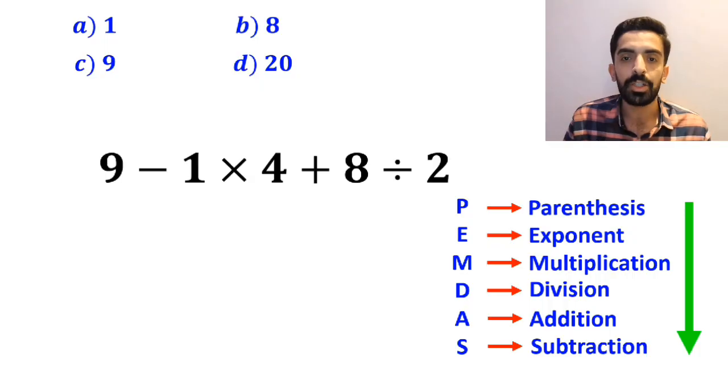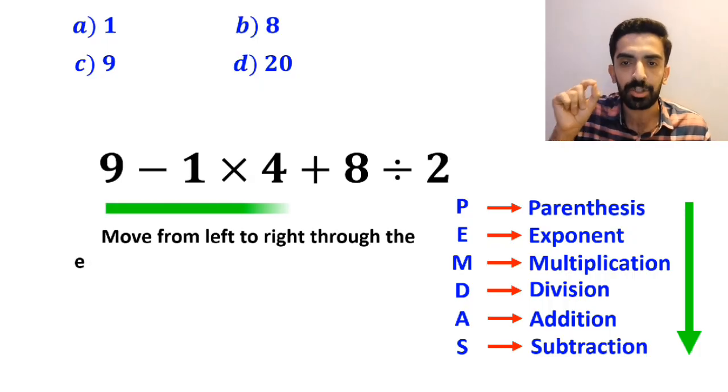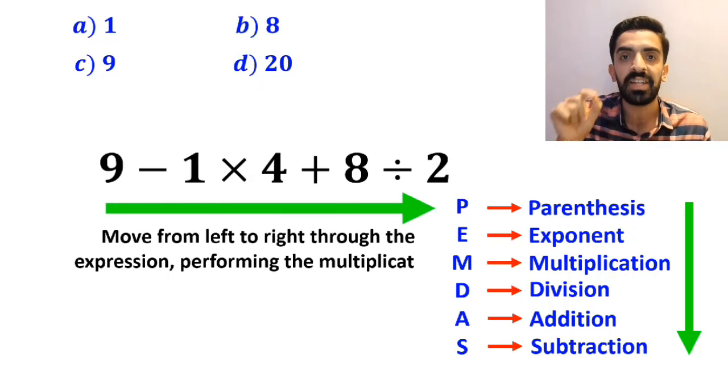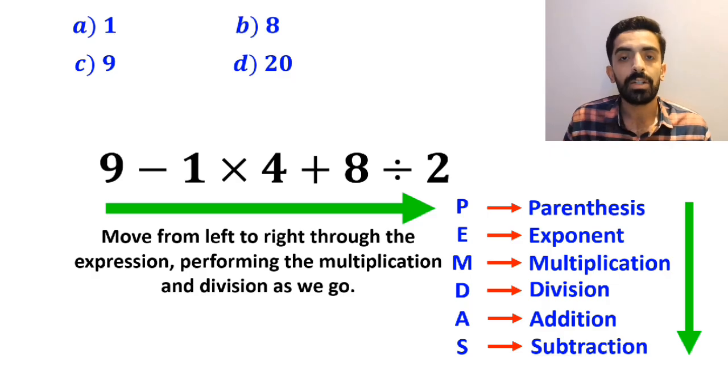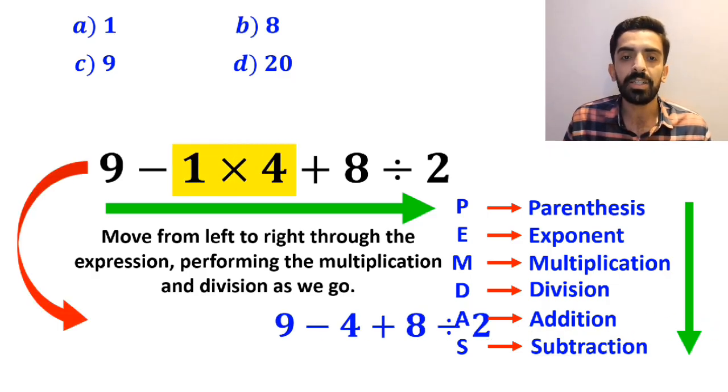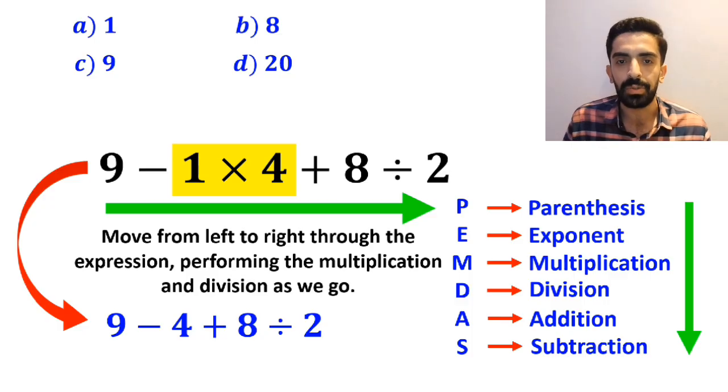And all we need to do here is to move from left to right through the expression performing the multiplication and division as we go. So, first we start with 1 times 4, and write this expression as 9 minus 4 plus 8 divided by 2.